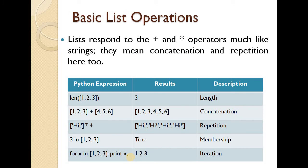Next are the basic list operations. Lists respond to the plus and star operators, much like strings — that means concatenation and repetition. For concatenation using the plus operator: [1, 2, 3] + [4, 5, 6] gives the result [1, 2, 3, 4, 5, 6].